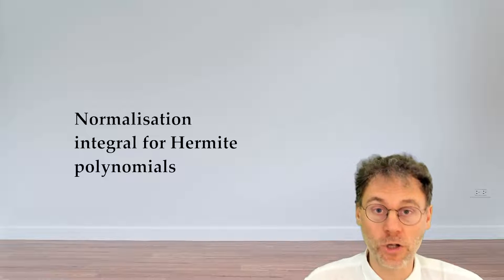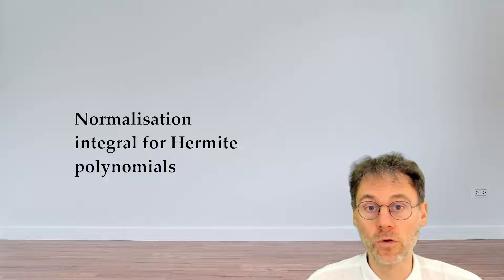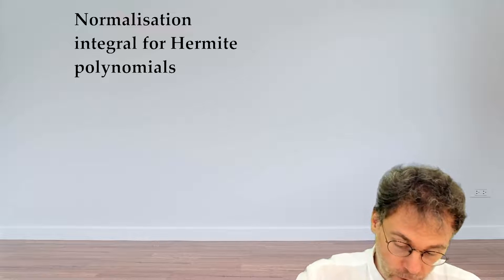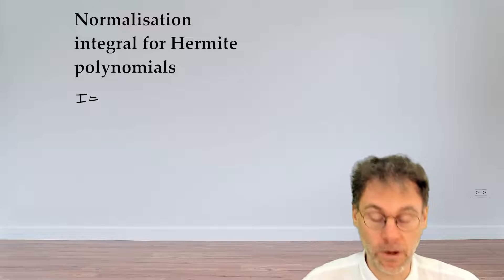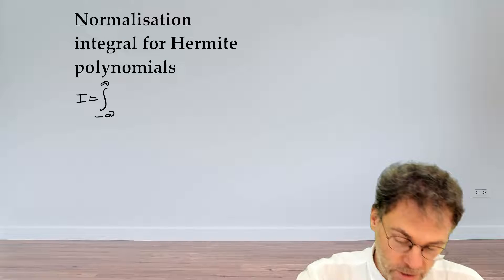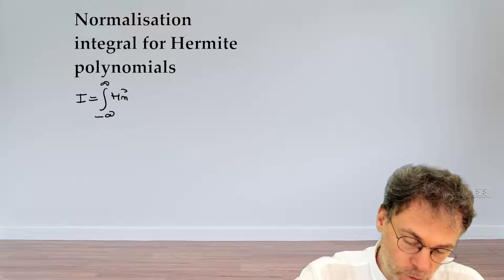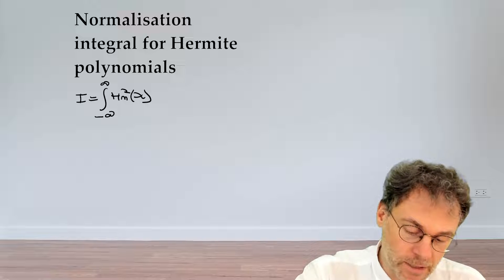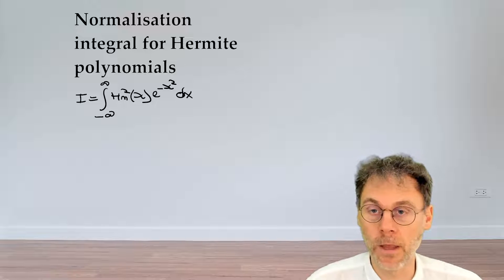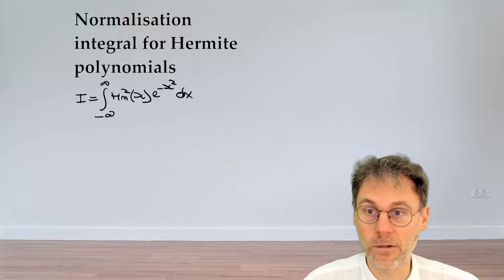If we want to expand a function as a series expansion involving Hermite polynomials, it's useful to have the normalization integral — the scalar product of the Hermite polynomial with itself. With our definition of scalar product, that turns out to be the integral from minus infinity to plus infinity of the Hermite polynomial squared, times our weighting function exponential minus x squared dx. This is a very fun integral to calculate, and we'll use some clever mathematical tricks.